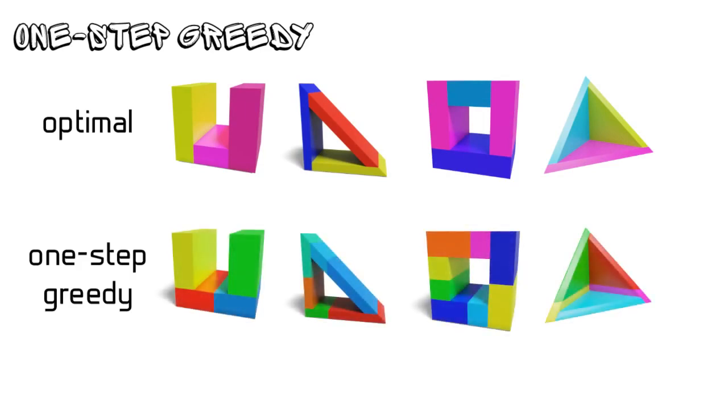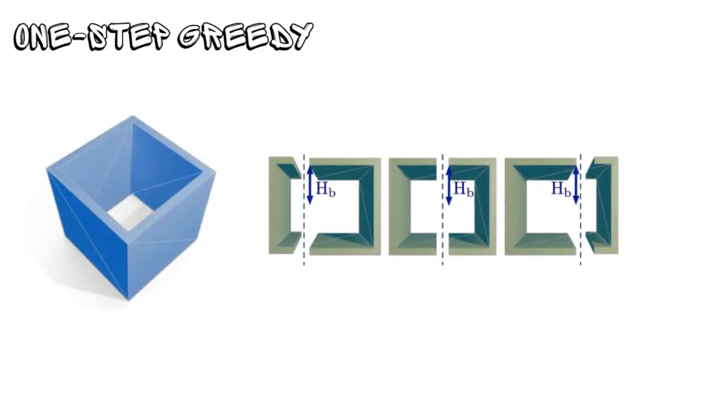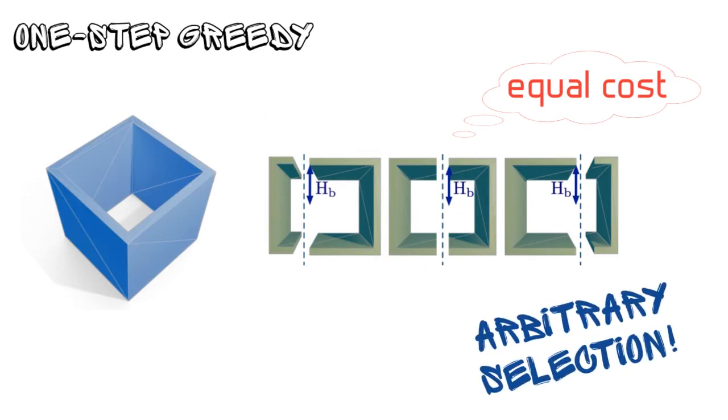As shown here, even for simple geometry primitives, the one-step greedy search can still generate redundant decomposed components. When only considering one cutting action, many candidate planes may lead to the same concavity deduction, and the cutting plane selection thus becomes arbitrary in these draw situations.